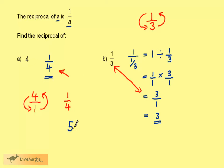For example, 5, which is 5 over 1, if we write it as a fraction, would have reciprocal 1 over 5, or 1 fifth.